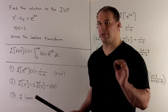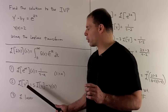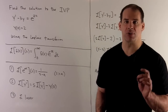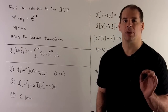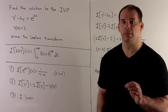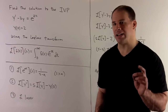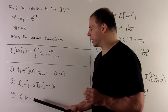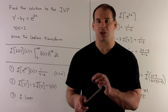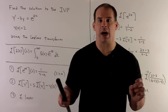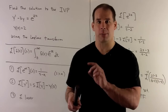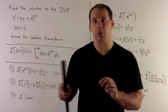Then we have a derivative rule: the Laplace transform of y prime equals s times the Laplace transform of y, minus y of 0. Finally, the Laplace transform is linear, so if we take the Laplace transform of a sum, we can split it up, and if we have constant factors in front, we're allowed to pull them out.